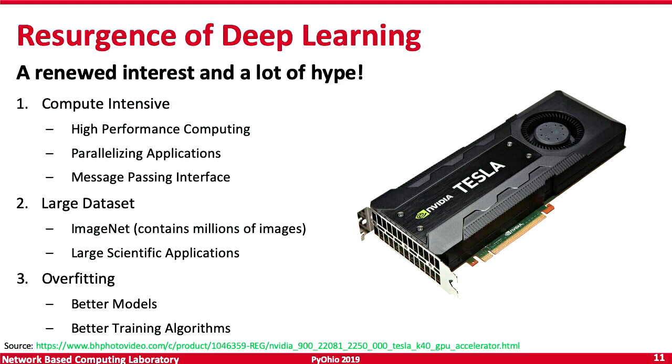We can parallelize our applications — the idea of multiple processes or multiple executions running at the same time without dependence on previous processes. This is where the message-passing interface comes into the picture. We now have large datasets like ImageNet with millions of images, much larger scientific applications requiring deep learning, and we're able to more accurately train models with better training algorithms.